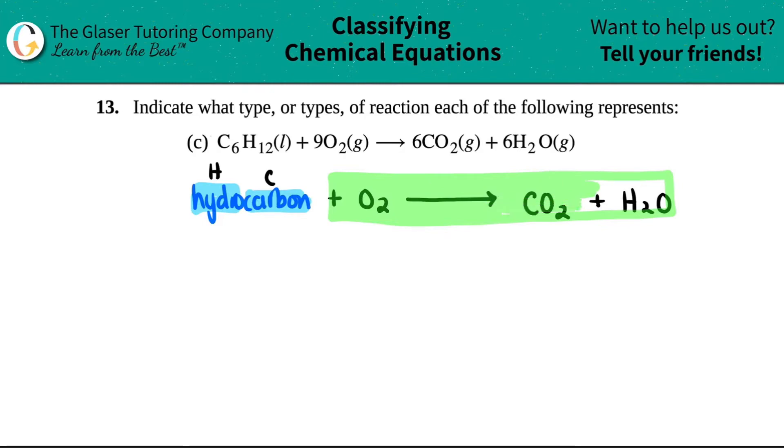If you see this in your formula, whenever you have a hydrocarbon and you're mixing it with oxygen and it always produces CO2, this is a very specific type of reaction. This is called a combustion reaction. Combustion is when you produce basically fire, it combusts. It's a very reactive reaction. Don't try that at home.